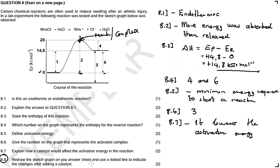8.8: they want us to redraw the sketch on the answer book and use a dotted line to indicate the changes after adding a catalyst. So instead of having an activated complex peak at the original level, with a catalyst the activated complex decreases — you don't need as much energy to kick-start the reaction once you have a catalyst.